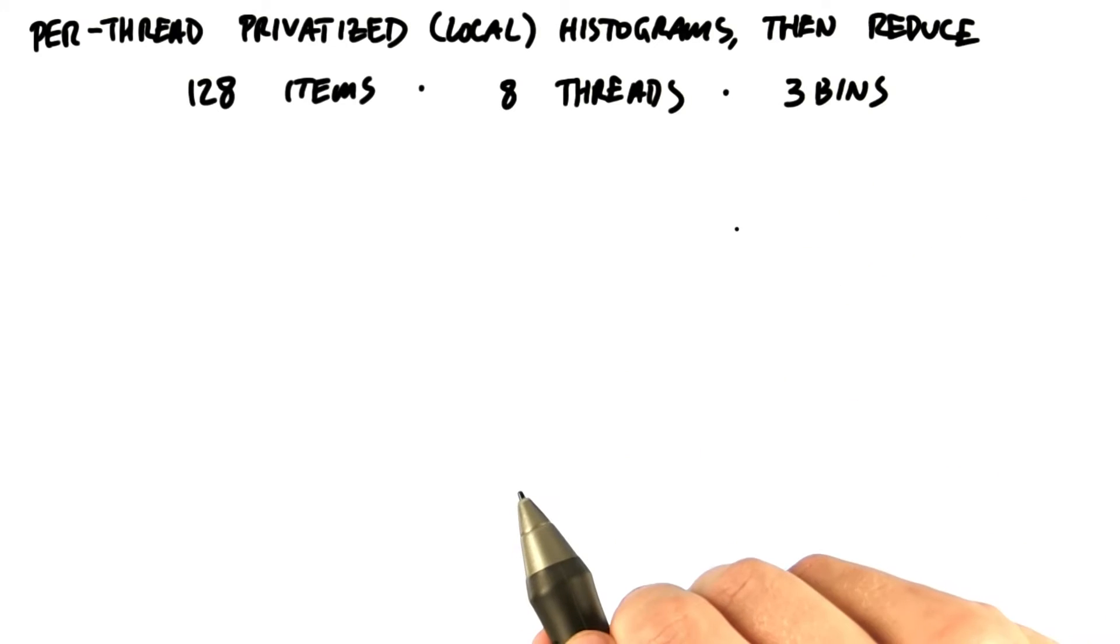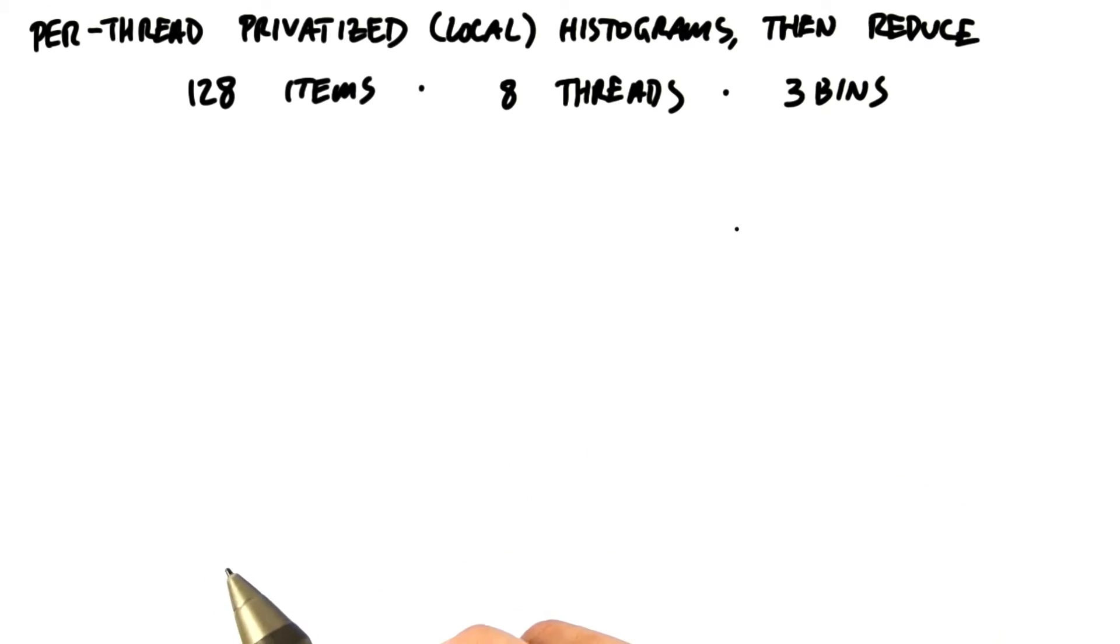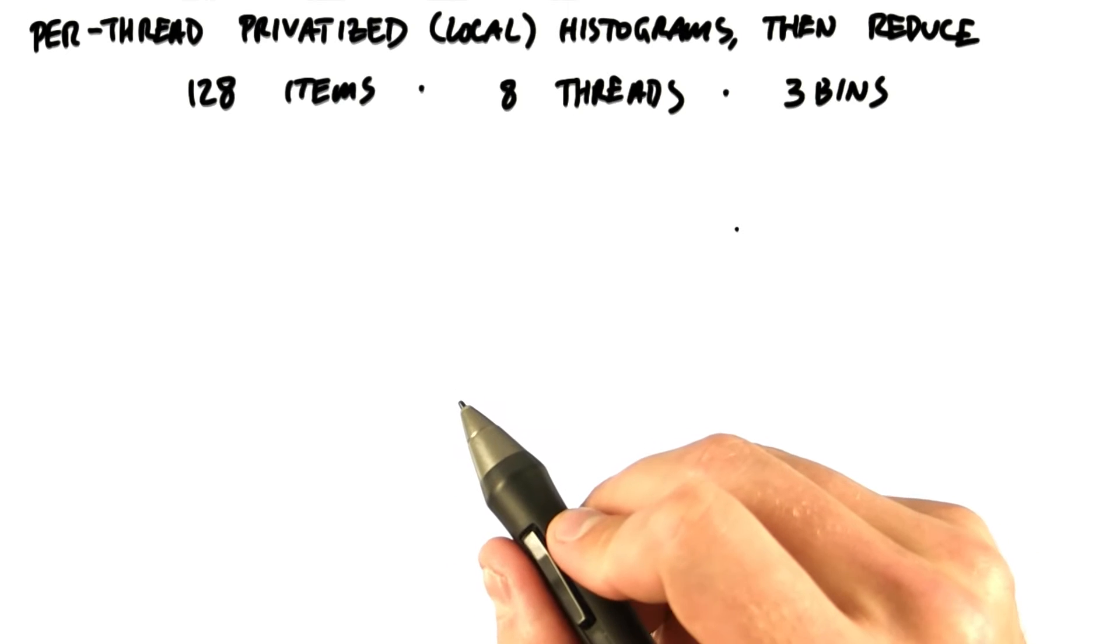In general, algorithms that rely on atomics have limited scalability because the atomics limit the amount of parallelism. If we have 100 bins and use atomics to access them, then no matter how awesome a GPU we might have, we're still only doing 100 useful things at a time.